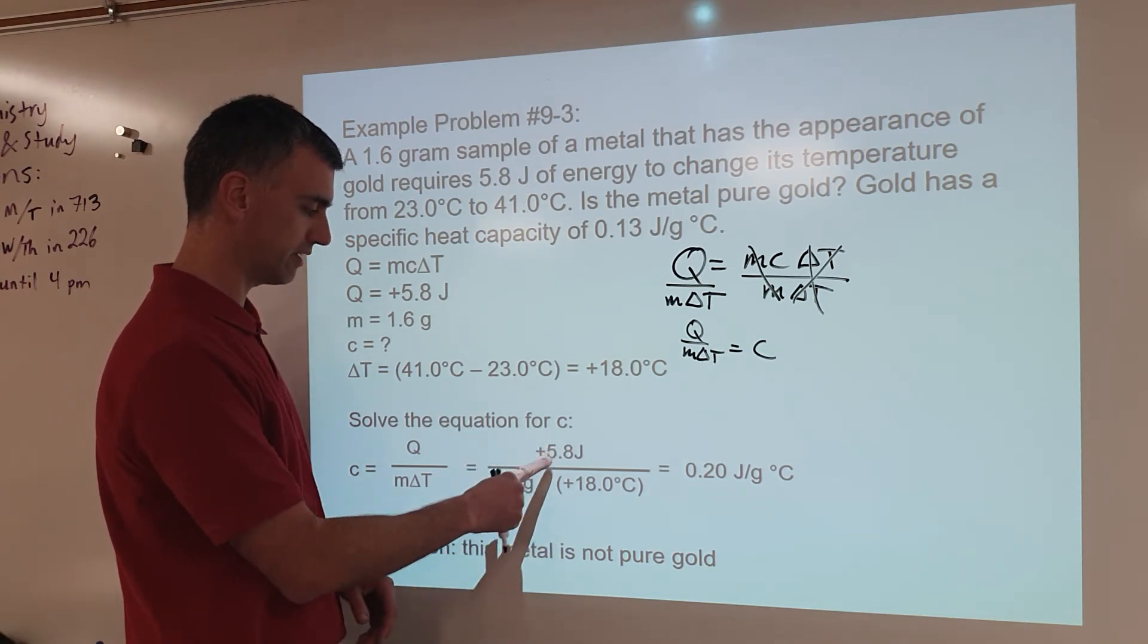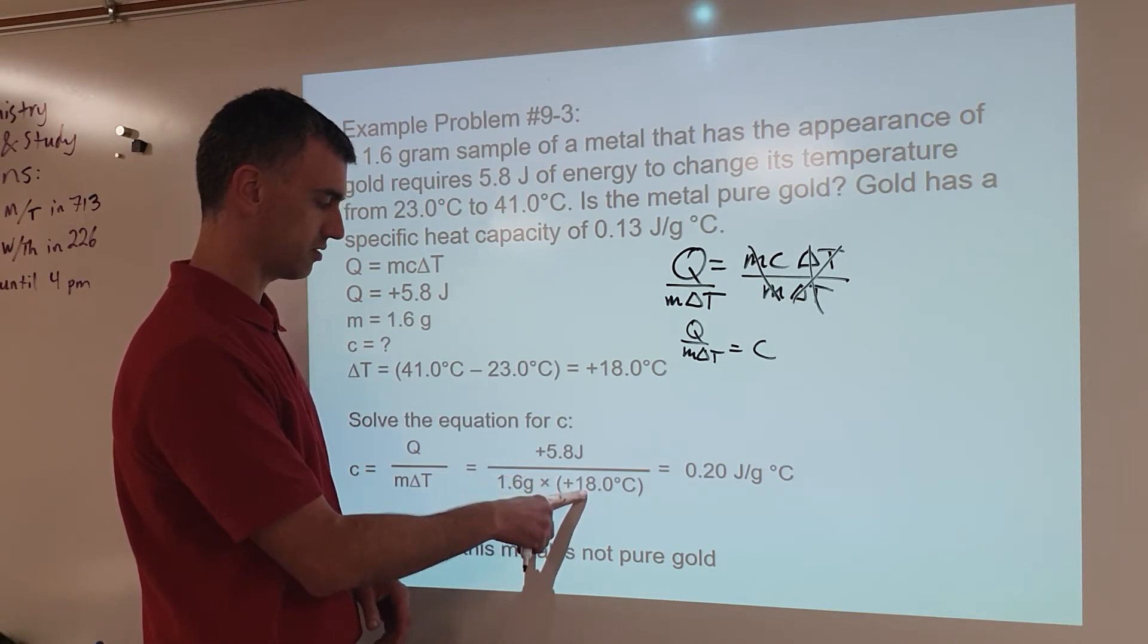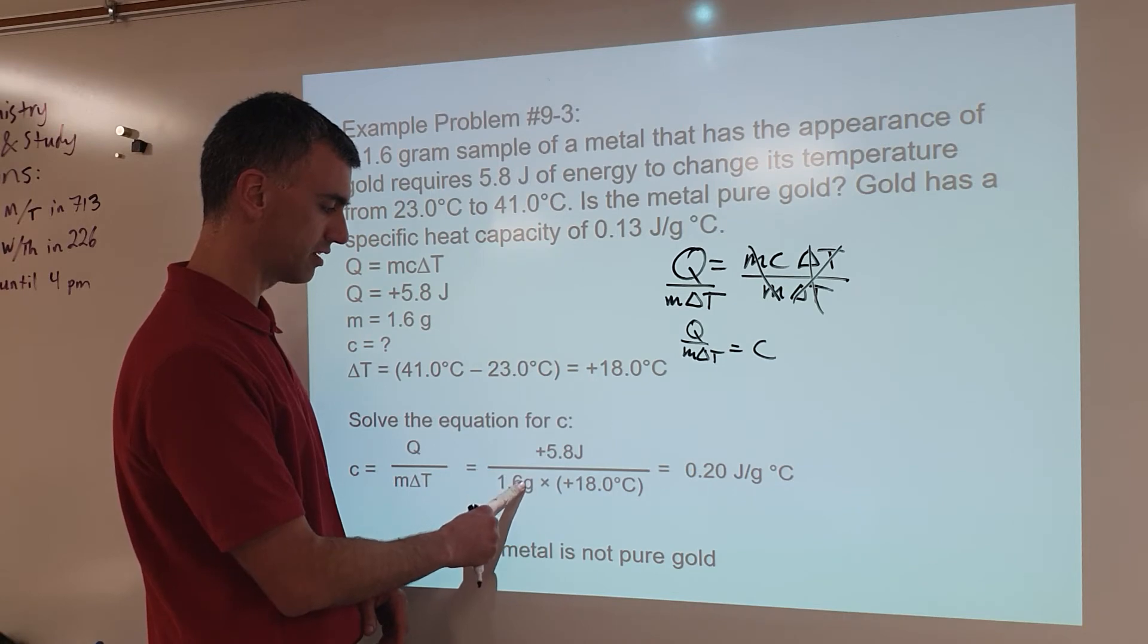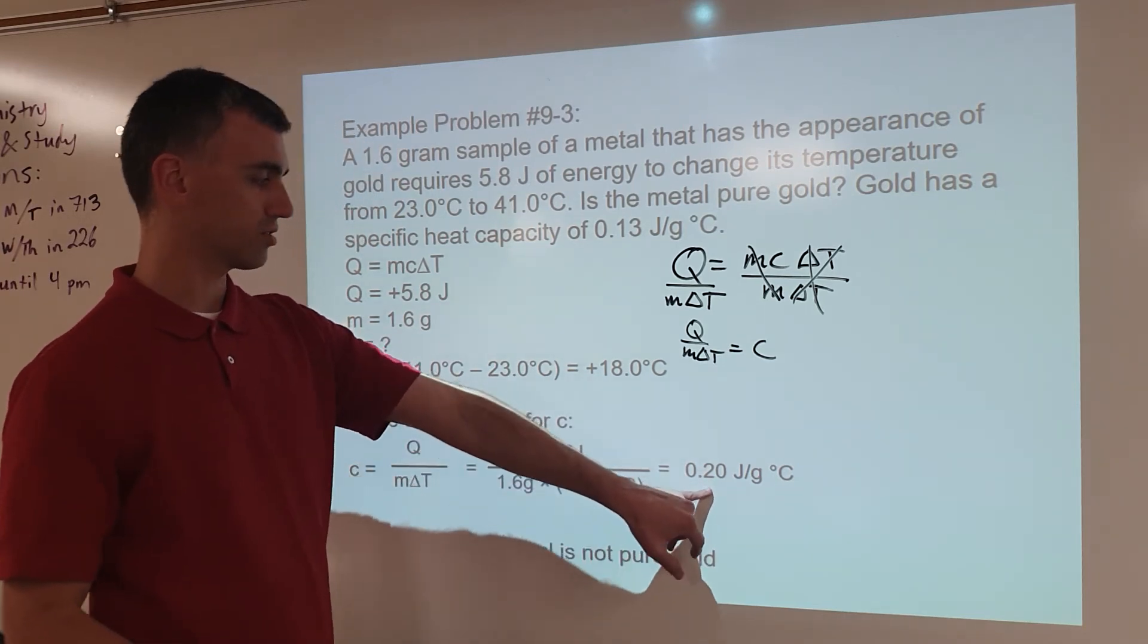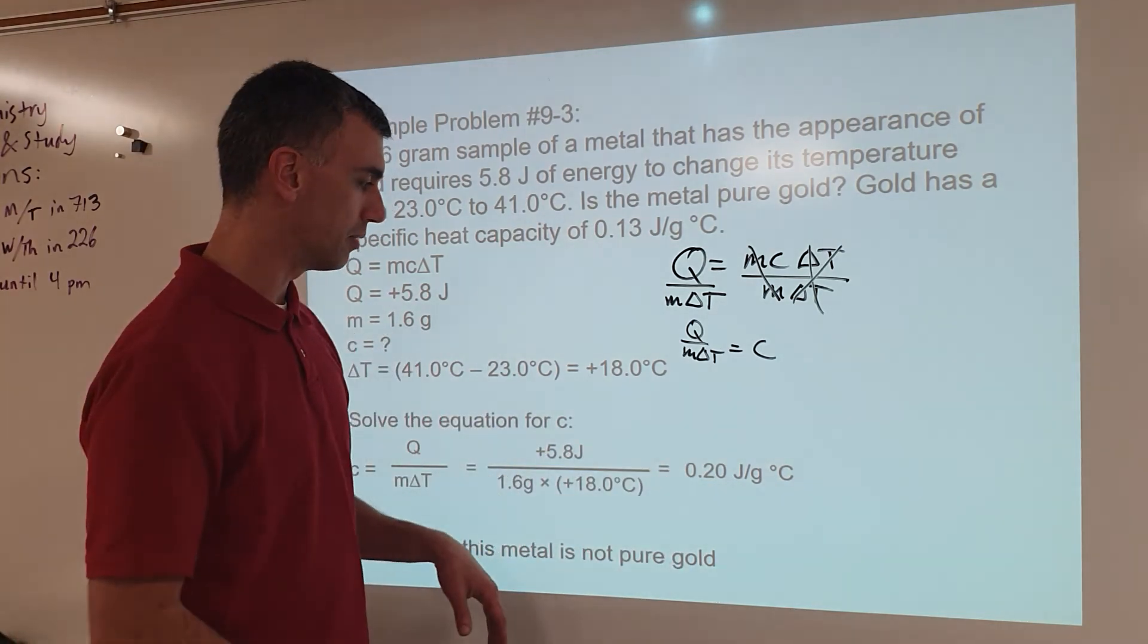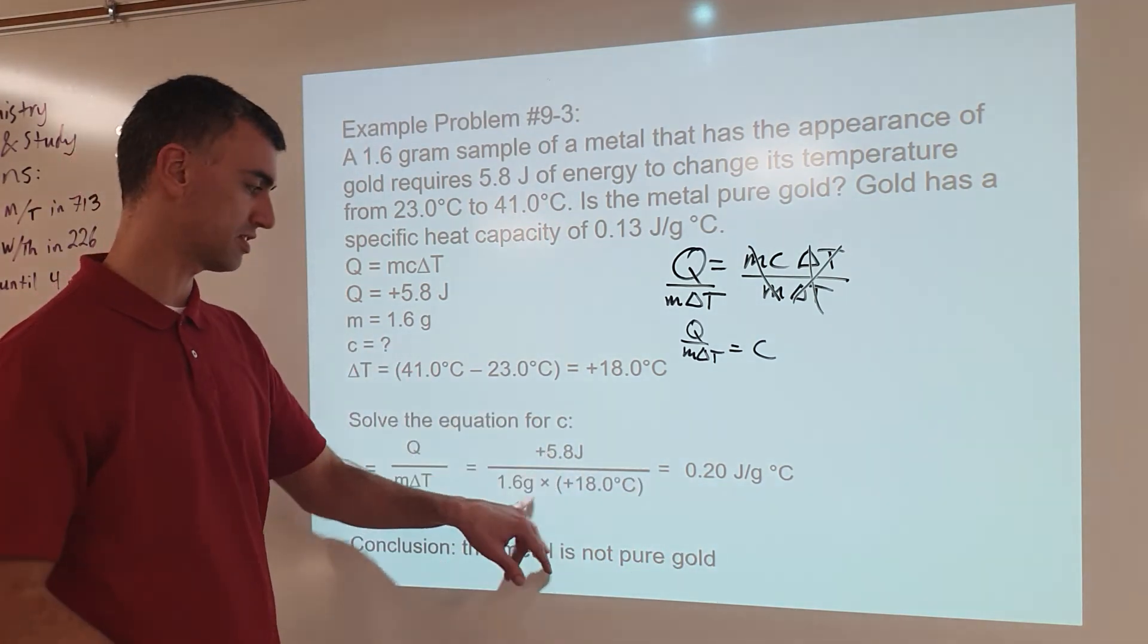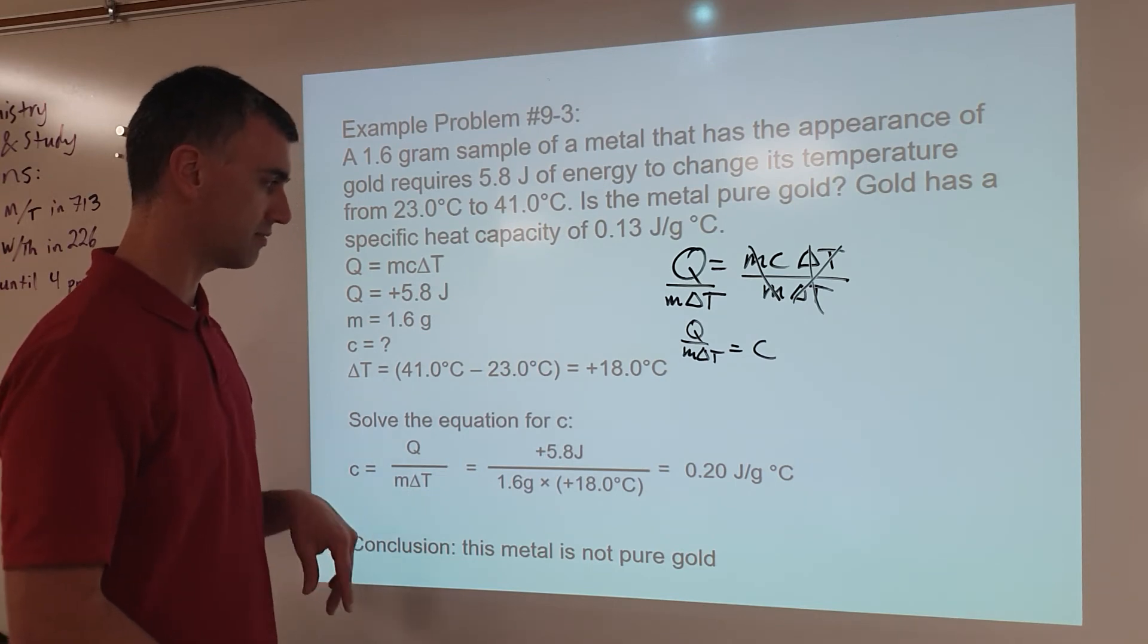So 5.8 divided by 1.6 times 18. So you could even multiply these together and then divide that by that, or this divided by this and then divided by this would give the exact same answer. And you'll notice if you do this on a calculator, it actually comes out to a much messier number. But we rounded to two significant figures here because this only has two significant figures, whereas these have a larger number of sig figs.